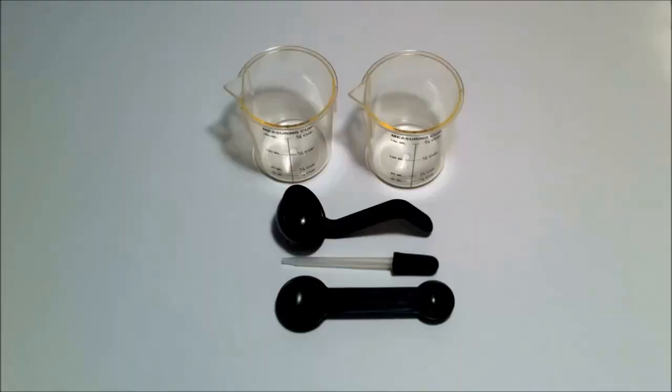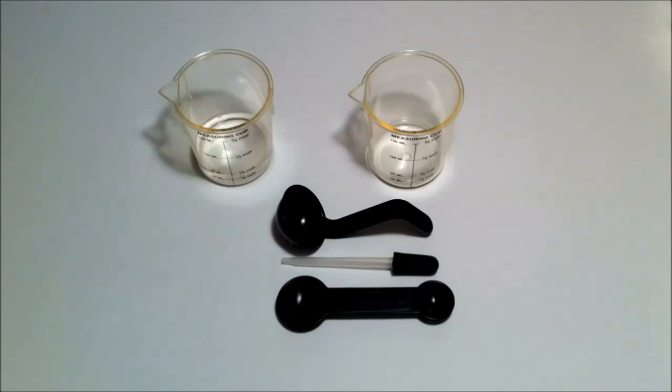Alright. Here's our first experiment. Liquid ice and worms. In one beaker mix an eighth cup of water with one teaspoon of part one. Get our water. And one teaspoon of part one.